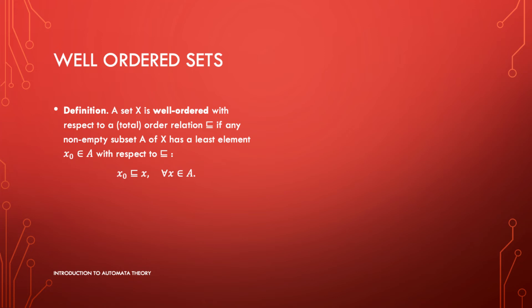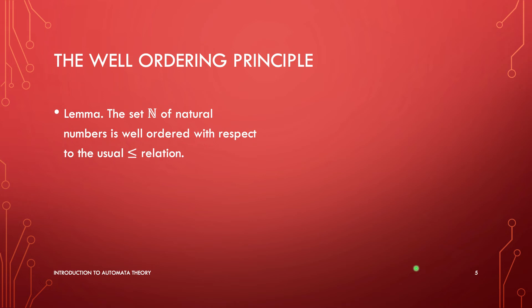I want to show you what this means in the case of natural numbers. This is called the well-ordering principle, which states that the set N of natural numbers is well-ordered with respect to the usual less-than-or-equal-to relation. This is the foundation of the induction principle because it means we can start from zero and then think about the successor of zero and the successor after that. You will see what this means in terms of proving properties for natural numbers.